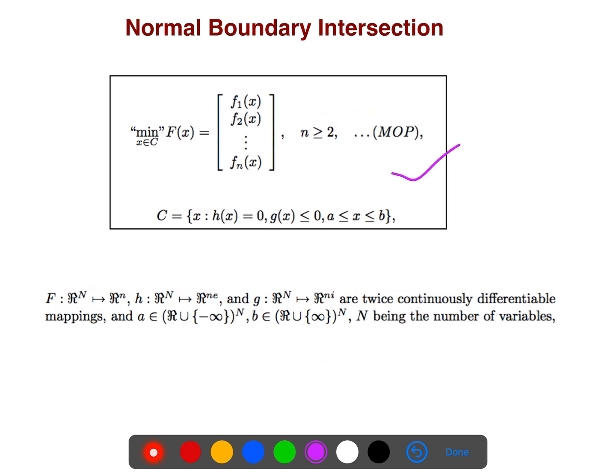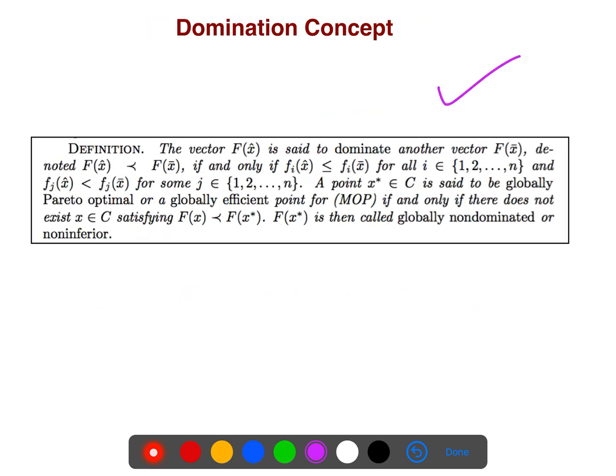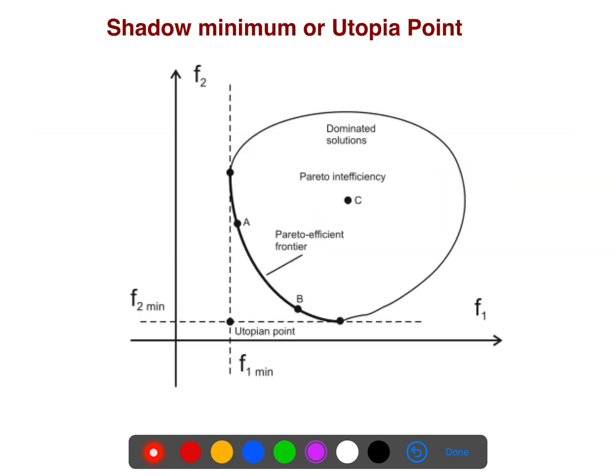So the problem is, as before, we have talked about domination. For example, one point is dominated by another point, and when we cannot find Pareto improvement, then that's on the Pareto optimal set or efficient set, like here, we are on the Pareto set.